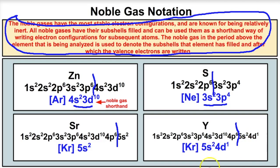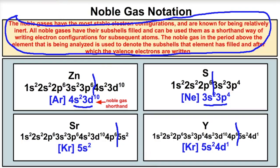Unless you're asked to write the noble gas notation specifically, you'll want to write the full electron configuration the long way. But if your instructor or professor allows the shorthand noble gas notation, that's how you do it. If you like what you see, click the subscribe button in the bottom right corner, and feel free to leave any comments or questions below. I hope this was helpful!